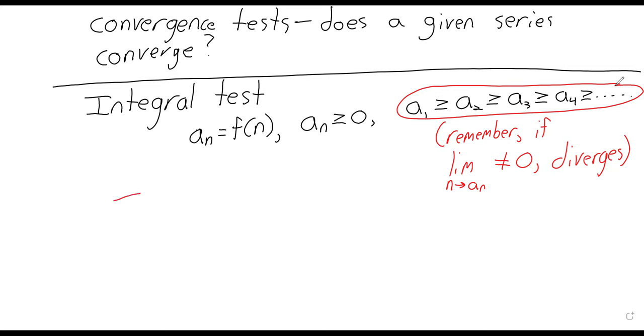The integral test says that this sum converges if and only if this integral from 1 to infinity converges. And you can mess around with that lower value, like you could have the sum from 10 to infinity converges if and only if the integral from 10 to infinity converges. I just put one, you know, because I had to put something there.